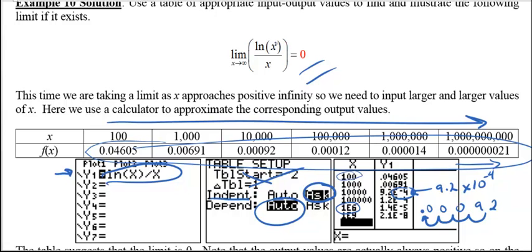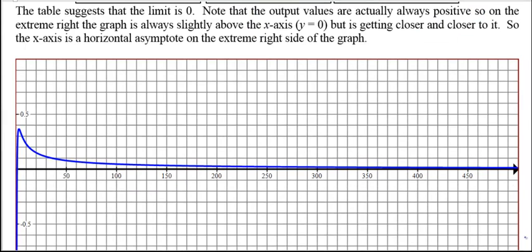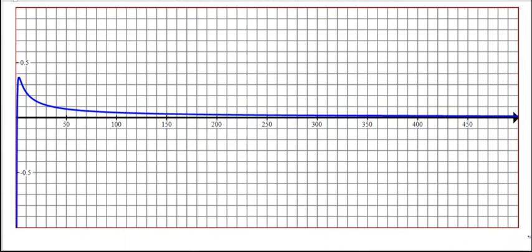Since we have the formula, we can also look at the graph — I graphed it in a program called Graphmatica. As x goes to 0 from the right, y goes to negative infinity. Then the function increases, comes up to a maximum, has an inflection point where concavity changes from concave down to concave up, and then continues to decrease, leveling out more and more as we go further to the right. This means y = 0 (the x-axis) is a horizontal asymptote, confirming the limit as x → ∞ is 0.